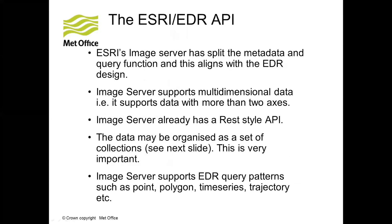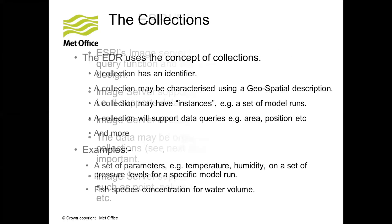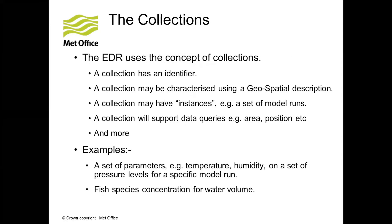Esri's Image Server splits the query function from the metadata query. It supports multidimensional data. It also already has a REST-style API. The data is organized as a set of collections — you call them services, buckets, and folders — but it maps extremely well. The Image Server supports EDR query patterns such as points, polygons, time series, trajectories, etc. Let's look at collections, and they do map one-to-one on the Image Server services and folders.